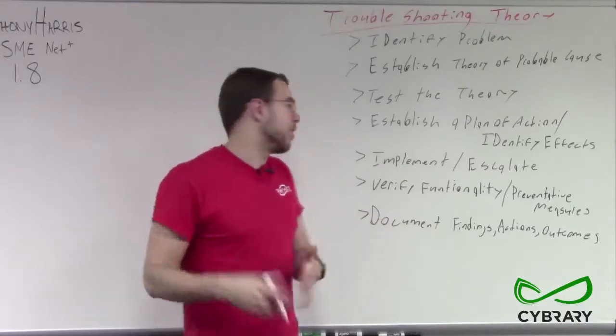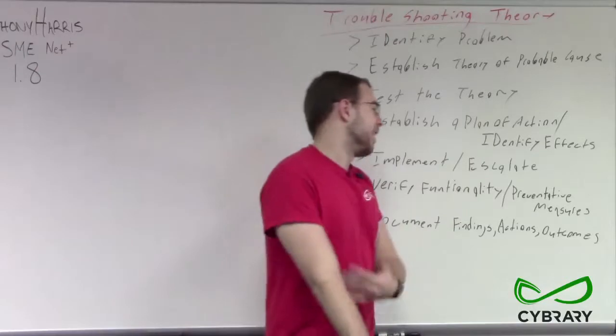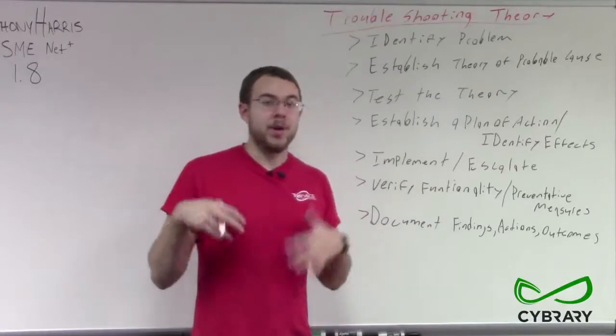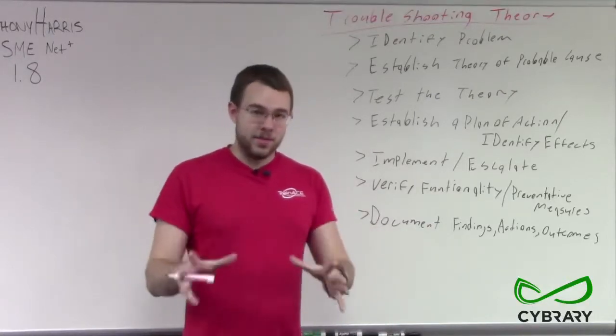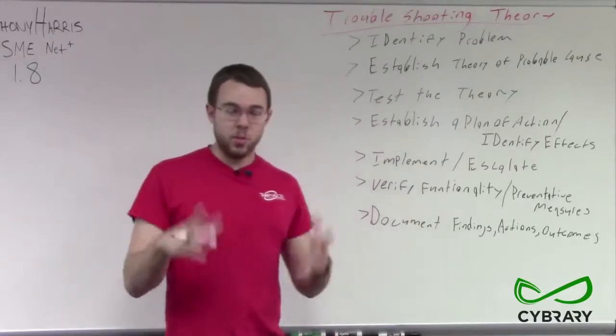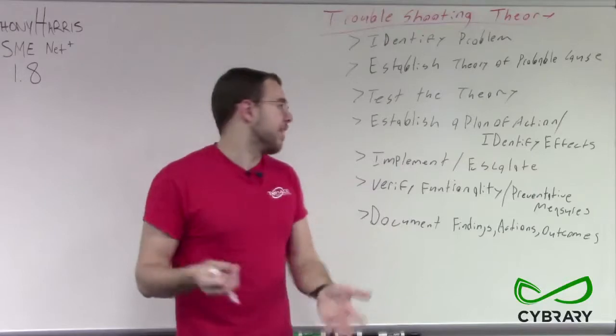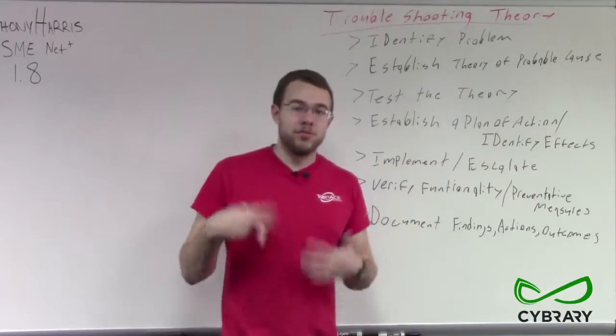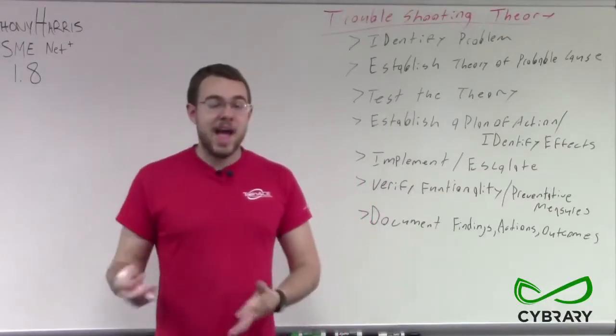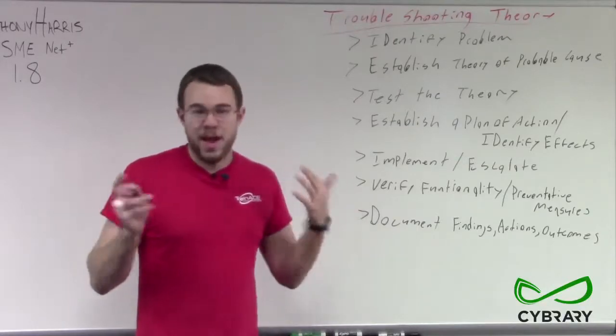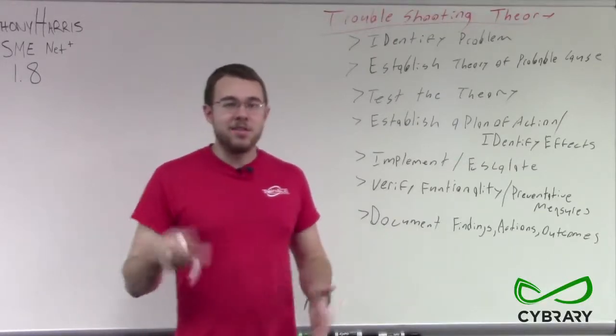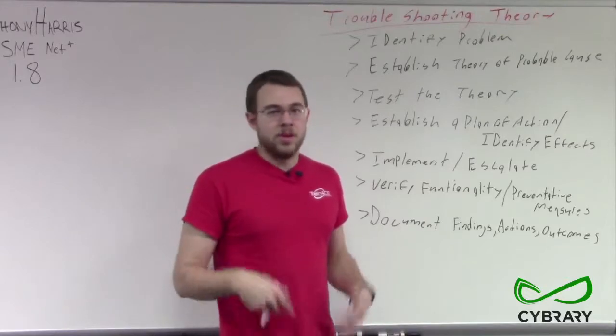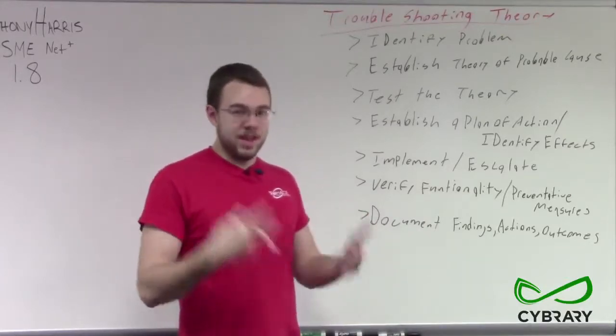Then we need to go to our next step where we establish a plan of action and identify effects. Going back to our example of our jabbering computer that we've disconnected, we've tested our theory and yes, this computer is the one jabbering on our network. So we need to establish a plan of action to fix that computer and prevent it from jabbering on the network. Maybe it's a server that we need to have on the network and we can't just say this computer is bad and throw it away. There's not many cases where we encounter an issue and just get a new computer. Even if the computer is the cause, we probably want to troubleshoot the issue itself.